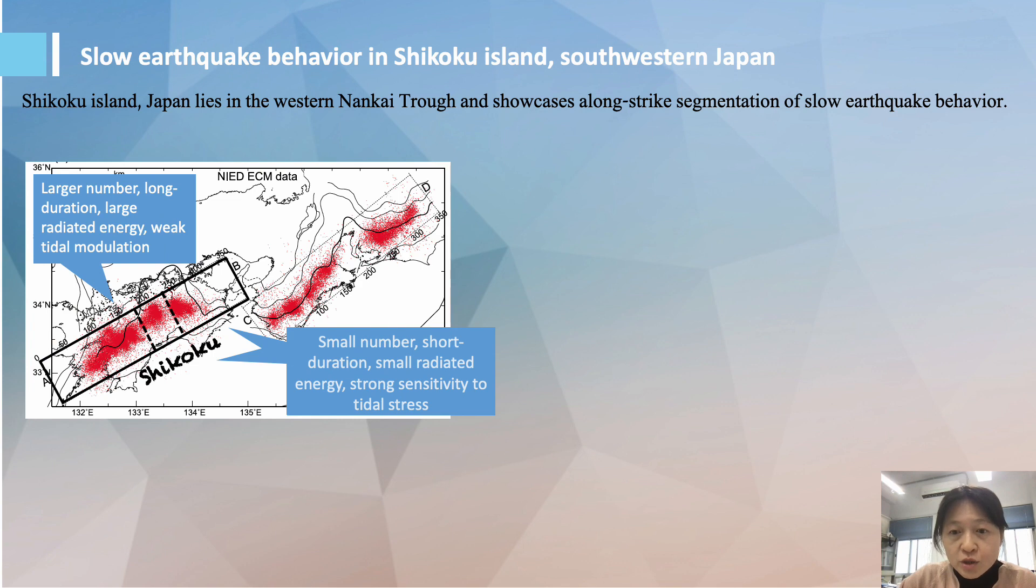The tremors in Shikoku, Japan inhibit remarkable diversity in their slow slip phenomena. In Western Shikoku, you have larger numbers of long-lasting tremors with higher radiated energy and weak tidal modulation.